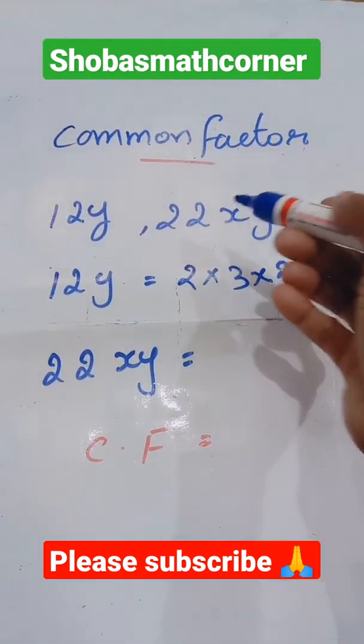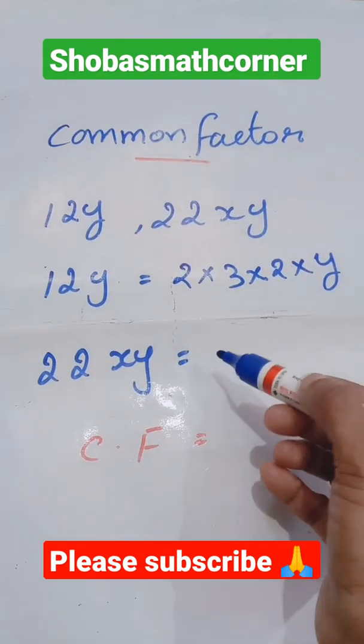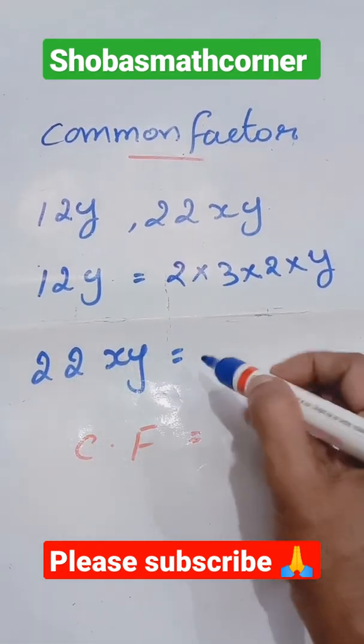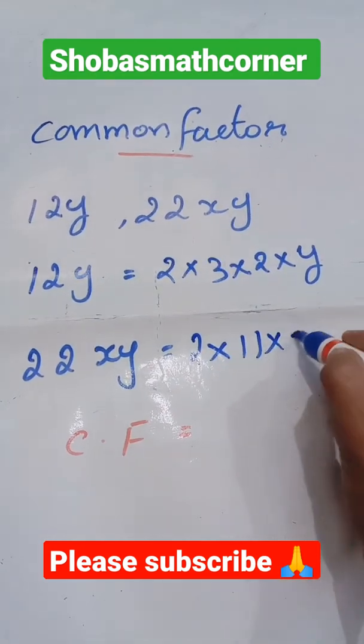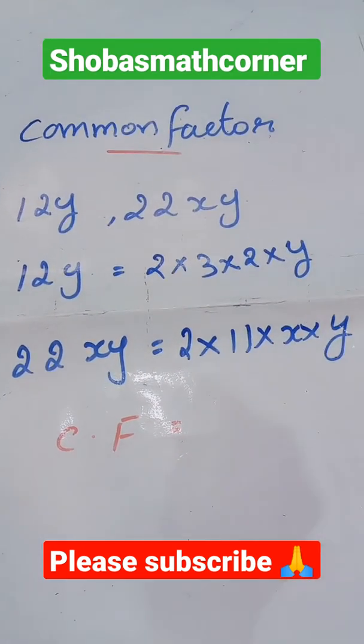Okay, and the next is 22xy, the monomial 22xy. How can I write 22? I can write this as prime factors 2 into 11, which equals 22. Then the variables x into y.